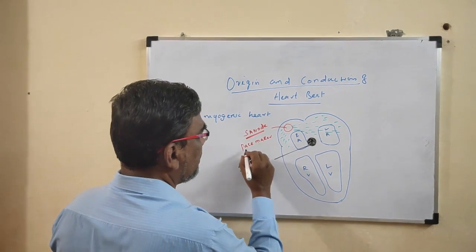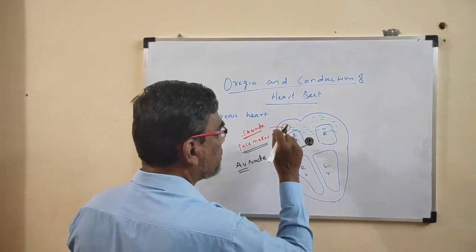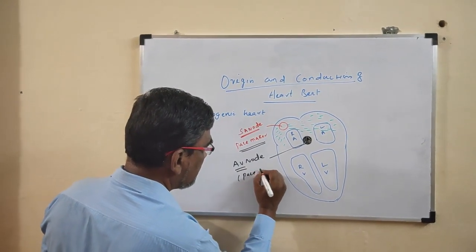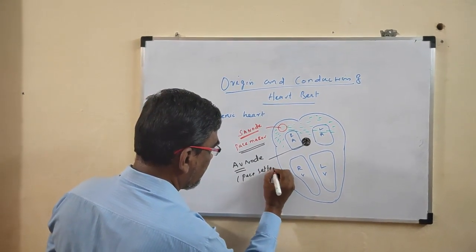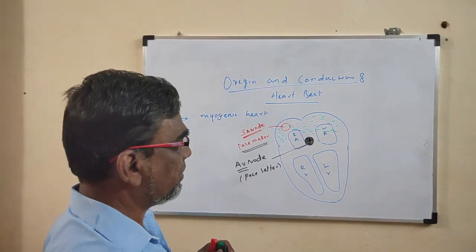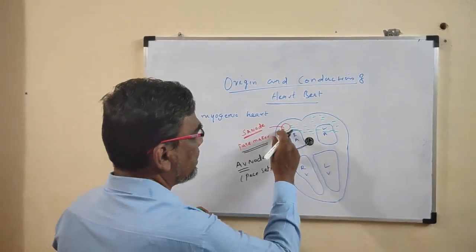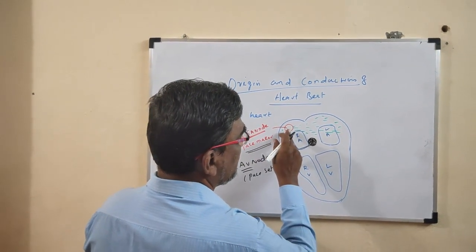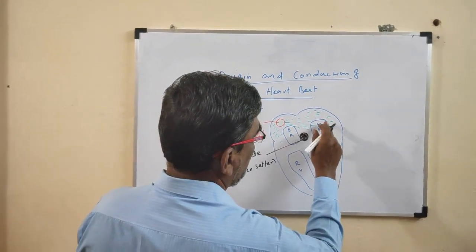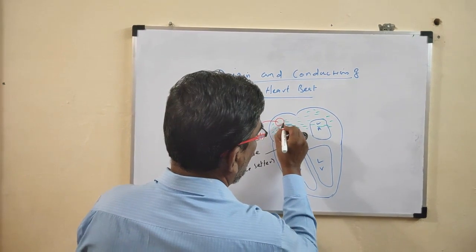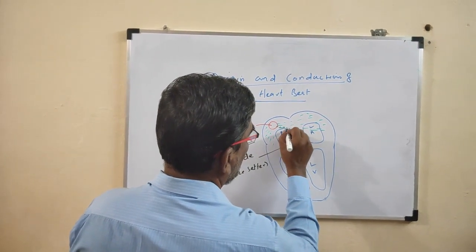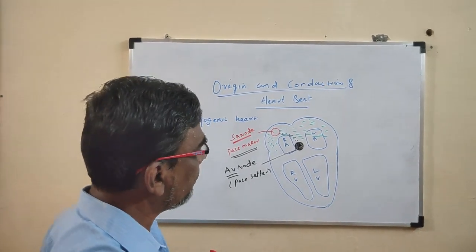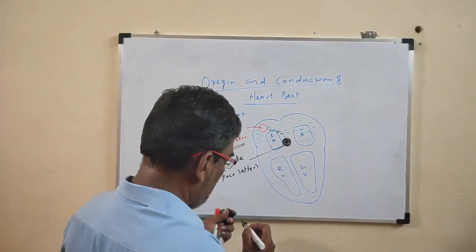The SA node generates electrical impulses which spread to the left auricle as well, and from there the impulse goes to the AV node — the atrioventricular node. So the electrical impulse travels to the AV node. The AV node is called the pace setter because it receives the stimulations from the SA node.